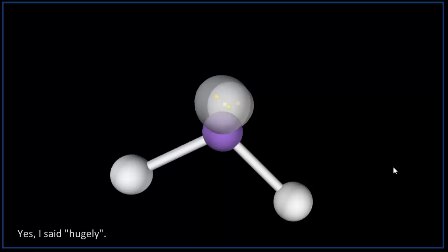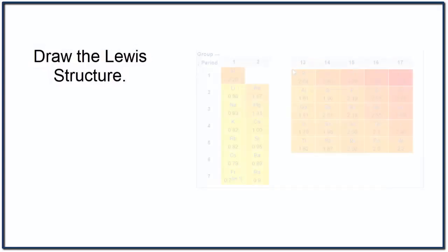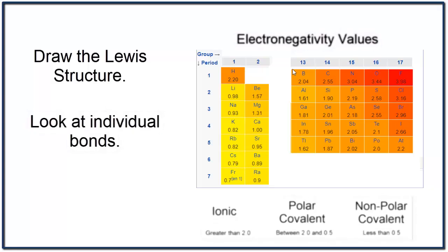Polarity is a hugely important topic in science. Everything from medicines to building materials, how the molecules interact is largely a function of their polarity. To figure that out, we drew the Lewis structures. Then we looked at the individual bonds, the electronegativity difference between those bonds. Finally, we looked at the shape and the symmetry, including those lone pair electrons, to figure out if the molecule was polar or nonpolar.